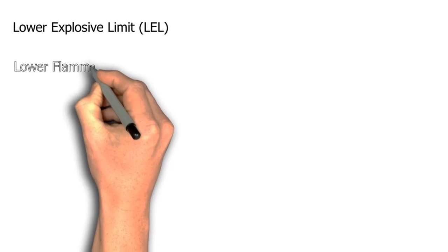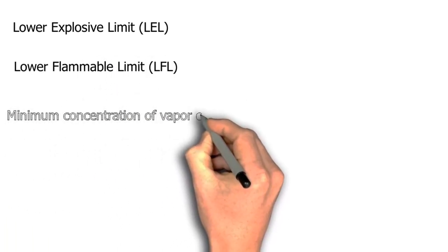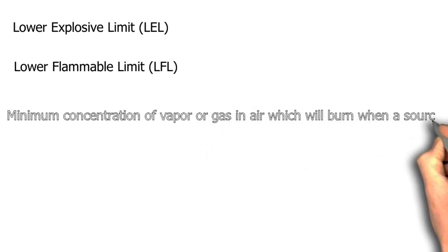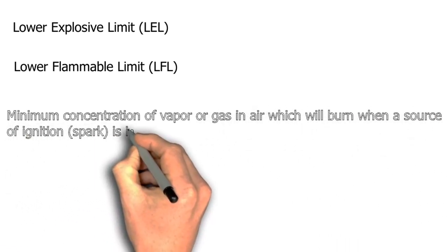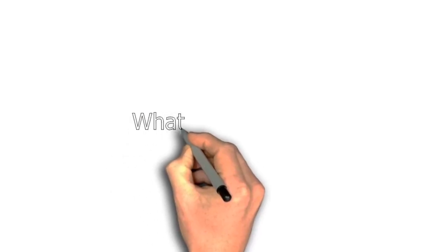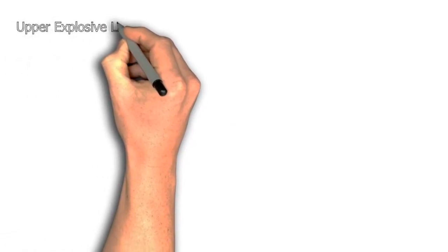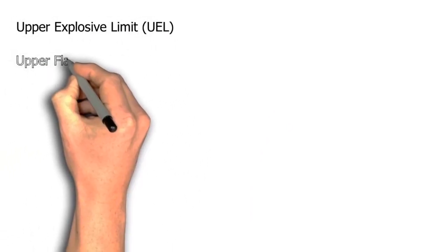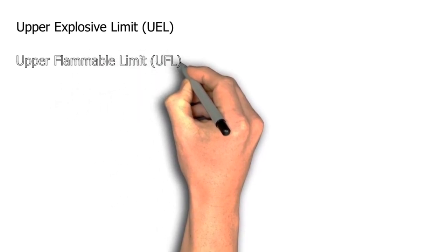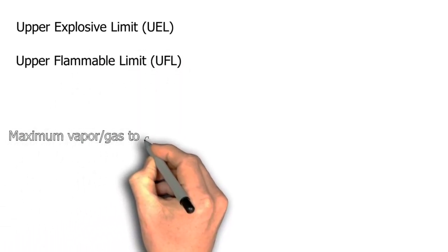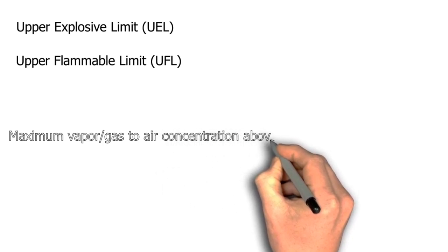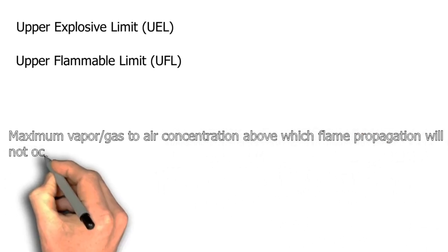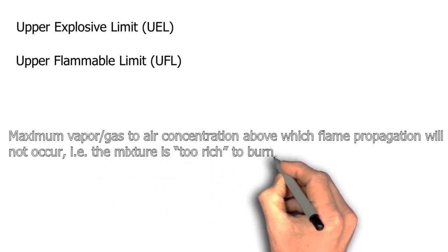What is LEL / LFL? Lower Explosive Limit (LEL) or Lower Flammable Limit (LFL) is the minimum concentration of vapor or gas in air which will burn when a source of ignition is introduced. What is UEL / UFL? Upper Explosive Limit (UEL) or Upper Flammable Limit (UFL) is the maximum vapor/gas to air concentration above which flame propagation will not occur — that is, the mixture is too rich to burn.